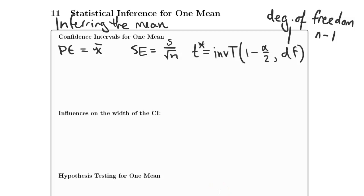Our confidence interval is x-bar minus t-star times the standard error up to x-bar plus t-star times the standard error.